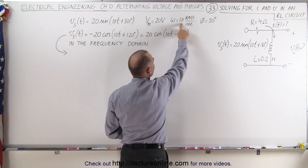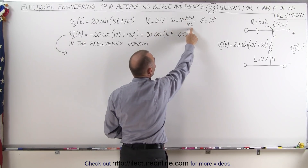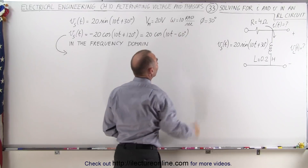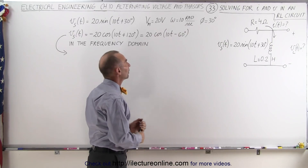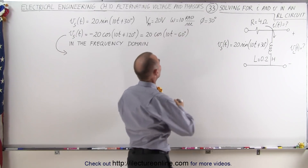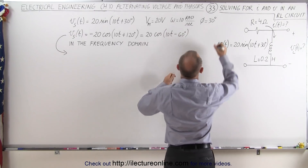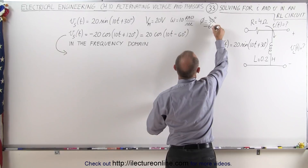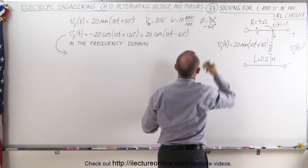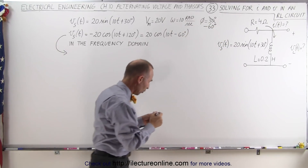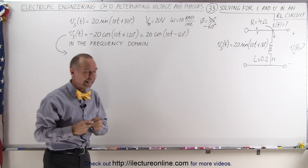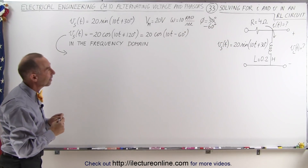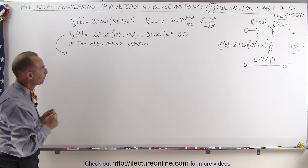The omega, the angular frequency, is equal to 10 radians per second. And the phase angle — in this case — is going to be minus 60 degrees, because we converted it to a cosine function instead of a sine function.